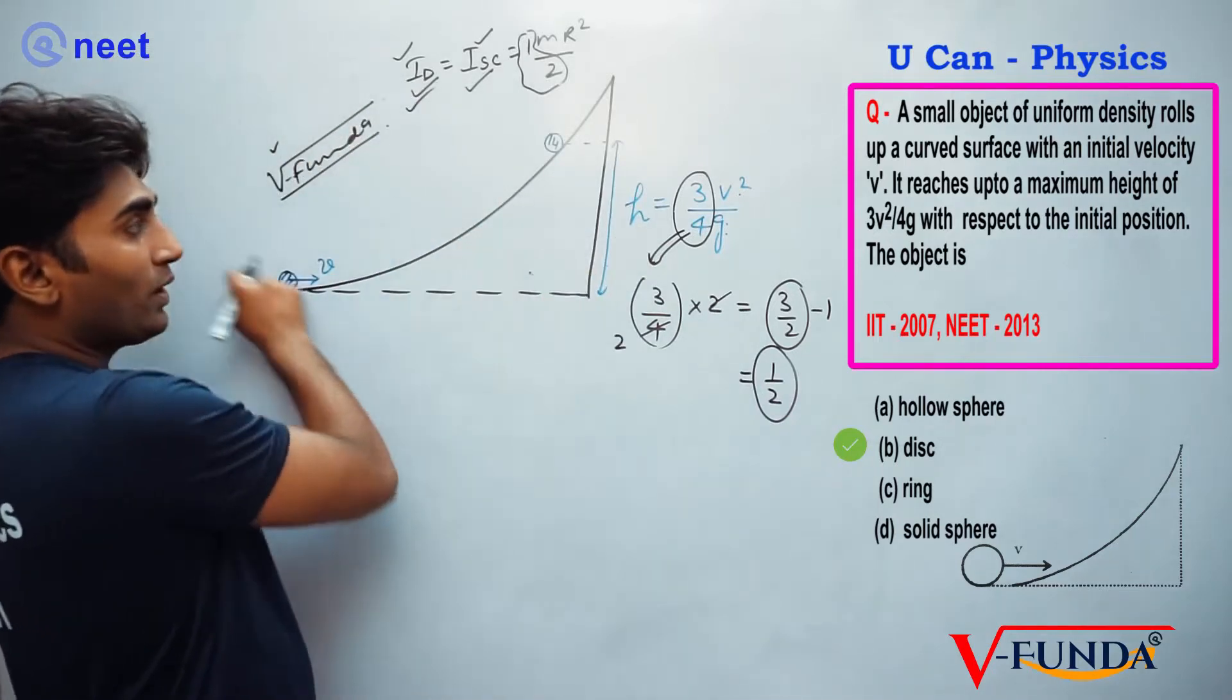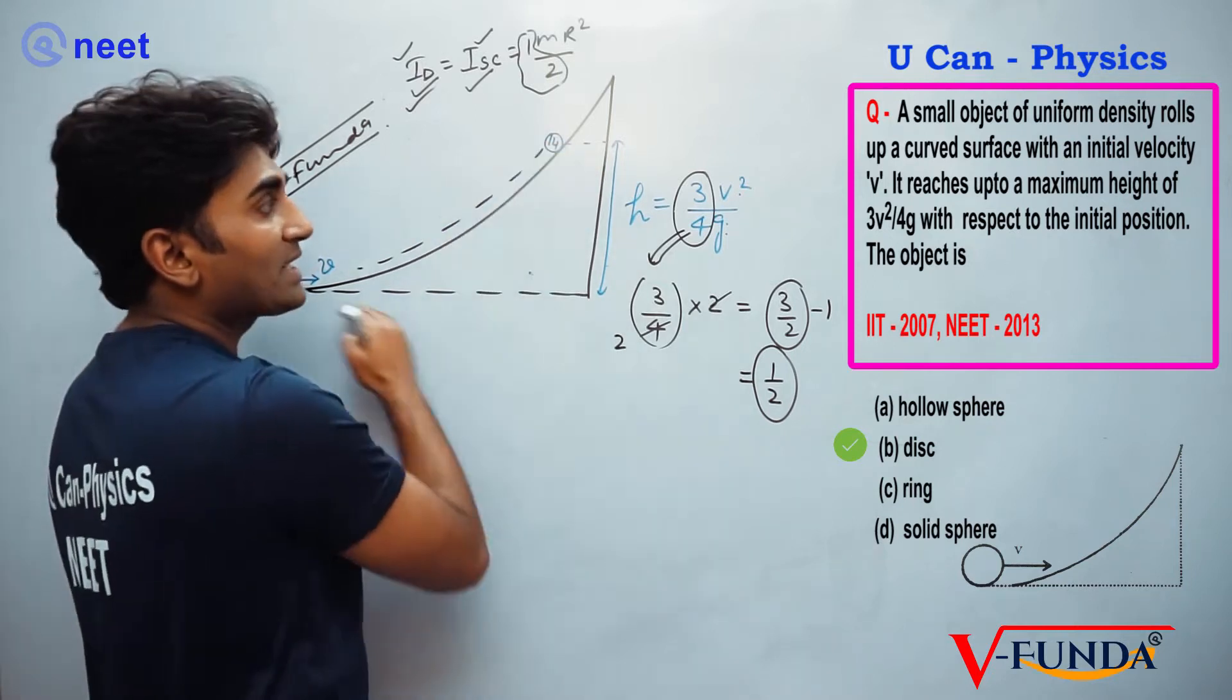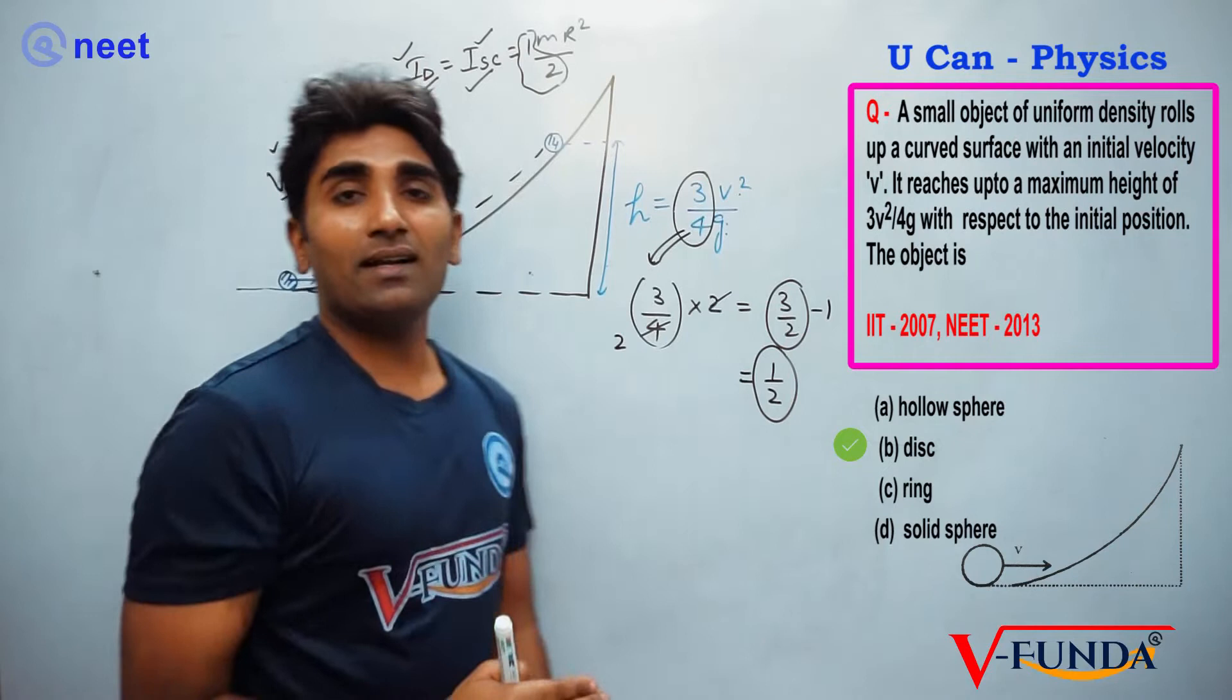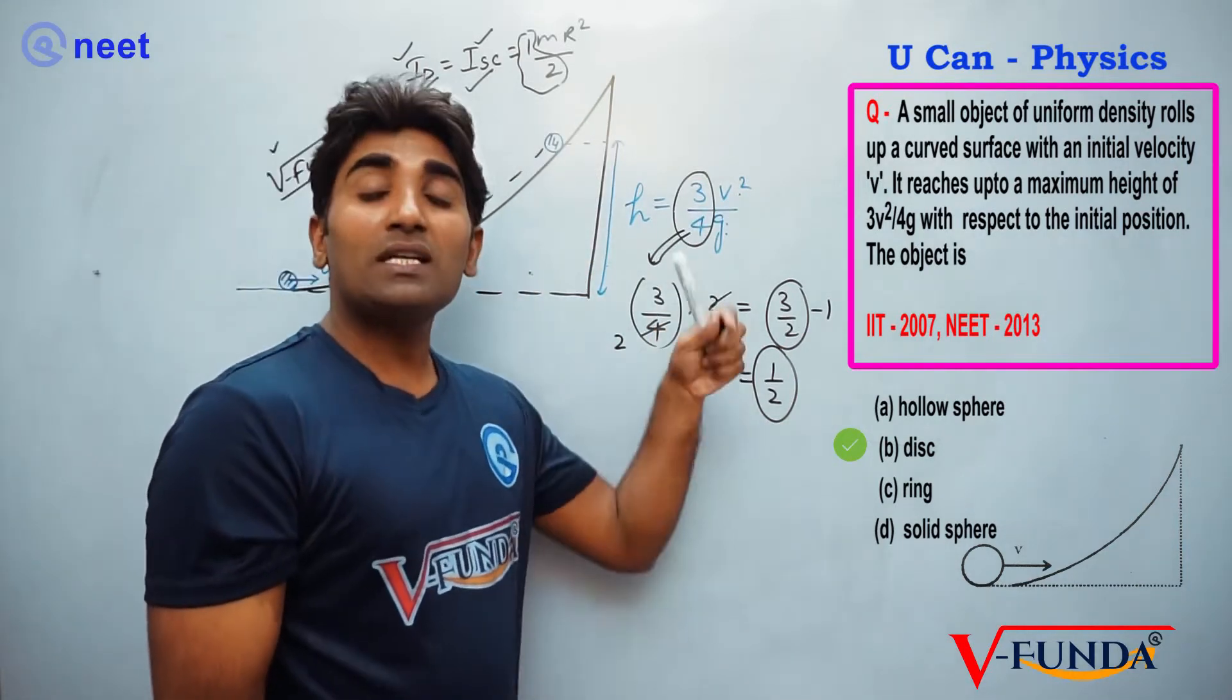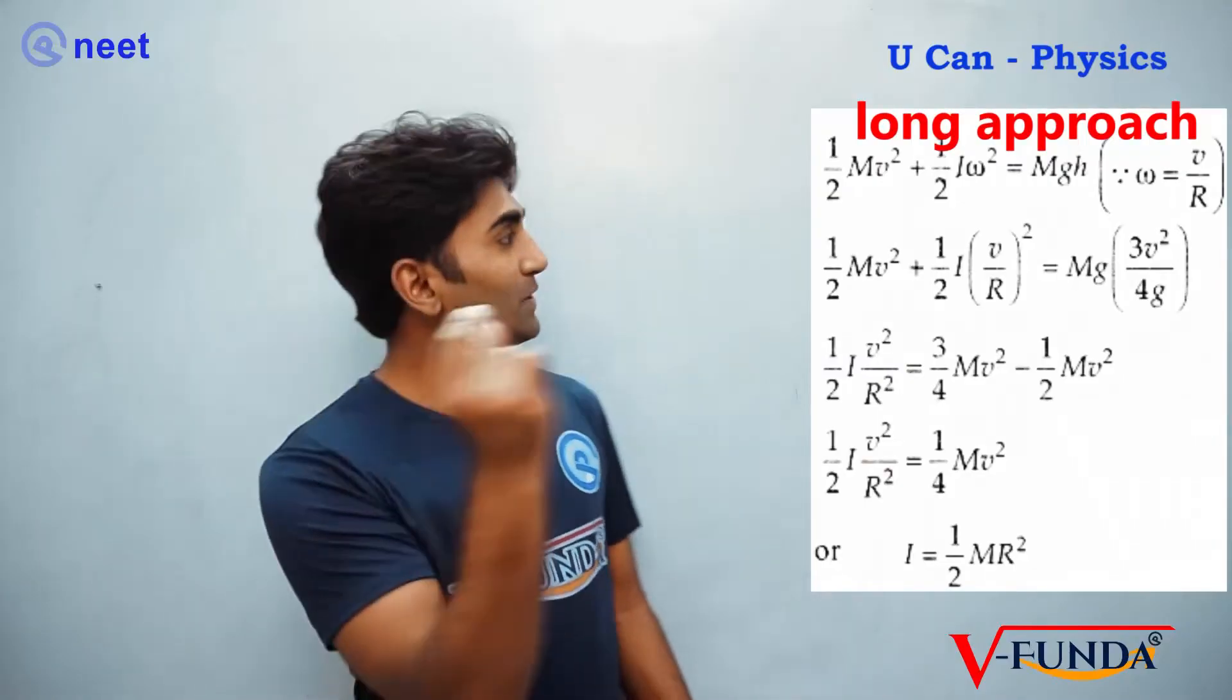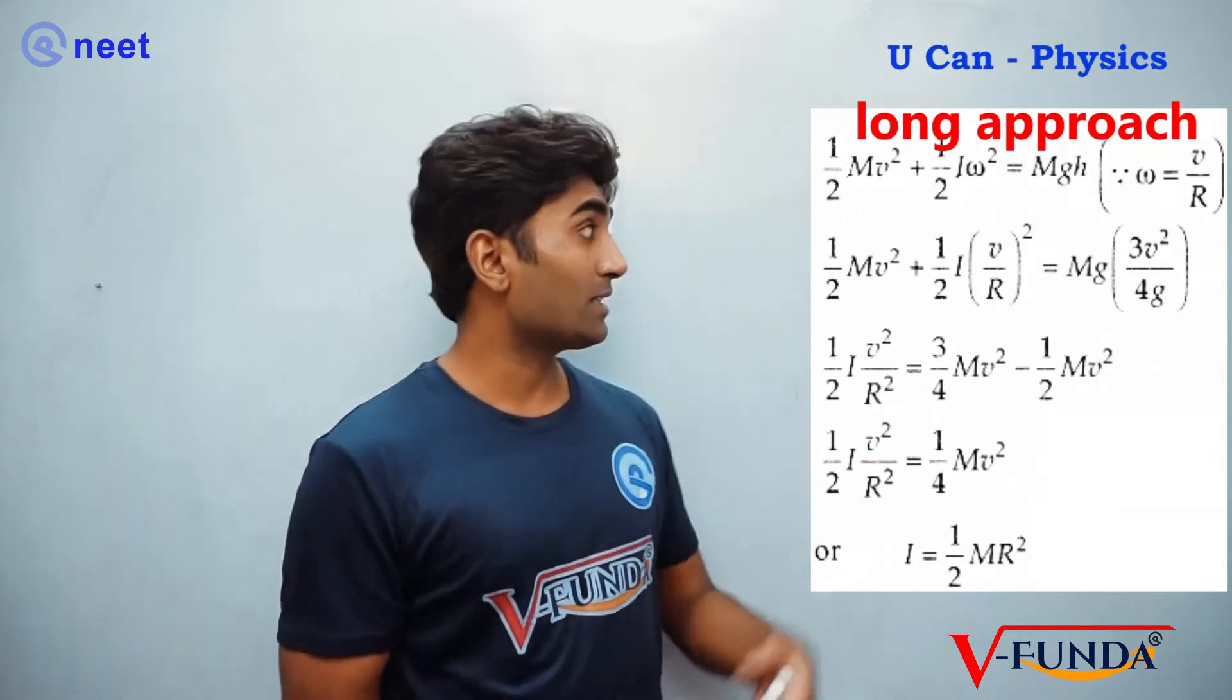The height given in a rolling problem, the maximum height covered, is designed in exam with a particular ratio which matches the moment of inertia. That's the actual solution, just see the basic fundamental concept.